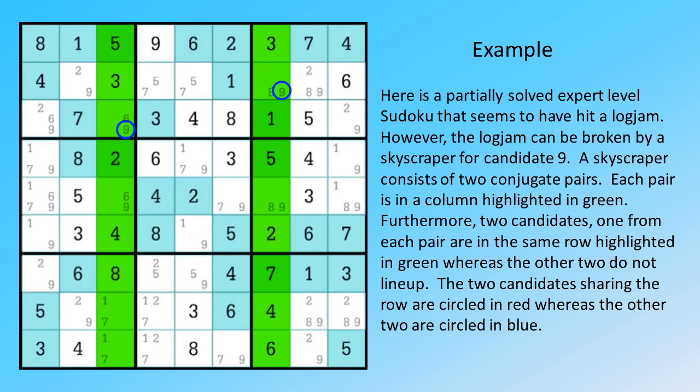Furthermore, two candidates, one from each pair, are in the same row highlighted in green, whereas the other two do not line up. The two candidates sharing the row are circled in red, whereas the other two are circled in blue.